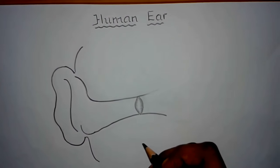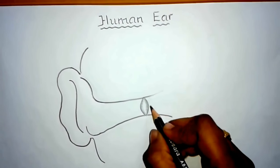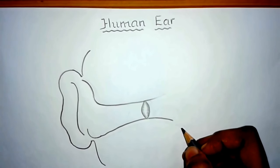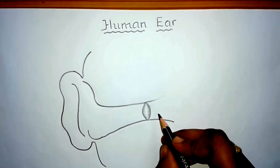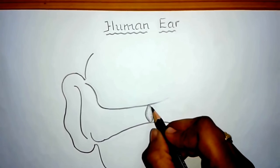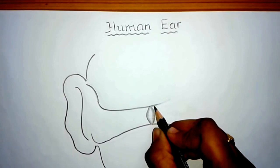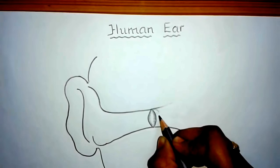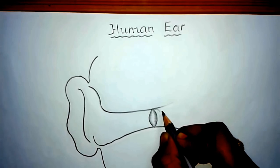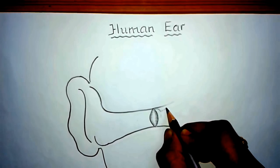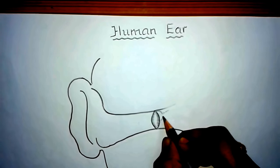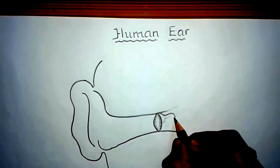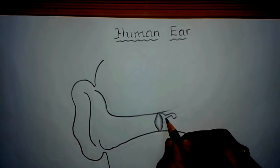Now let us draw the second important part of the ear, that is the middle ear. It consists of three small bones. The first one is the malleus, also called 'sutige' in Kannada. It is shaped just like a hammer, so draw a structure which looks like a hammer.